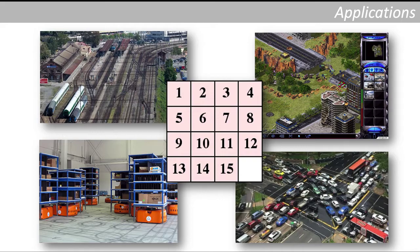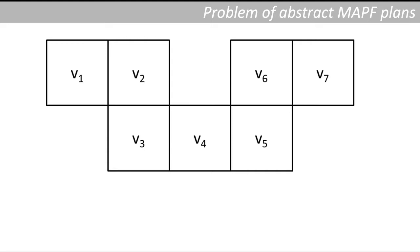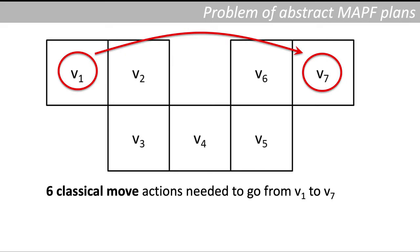But there is a gap between abstract model and practical execution of plans. Let's assume a map like this one with seven nodes, and the initial location of the agent is v1 and the agent wants to move to the node v7. In the classical model we just need six move actions to go from v1 to v7.